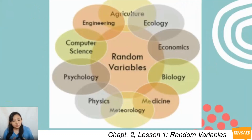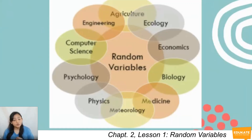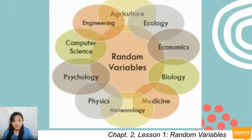Applying random variables in the real world, random variables are central to the use of probability in practice. They help model random phenomena. Random variables are relevant to a wide range of human activities and disciplines, including architecture, biology, ecology, economics, medicine, meteorology, physics, physiology, computer science, engineering, and others. They are used to model outcomes of random processes that cannot be predicted deterministically in advance, but the range of mathematical outcomes may be viewed.